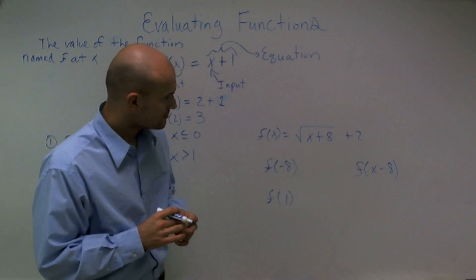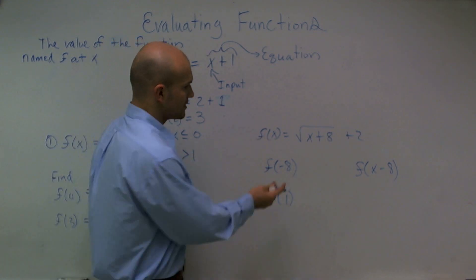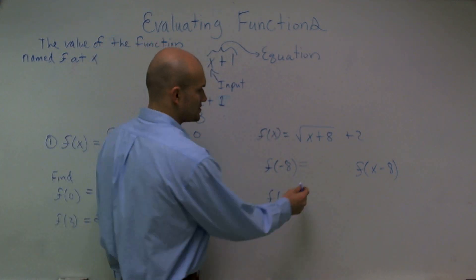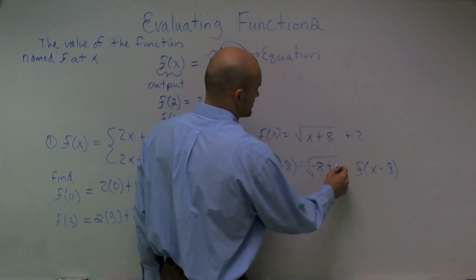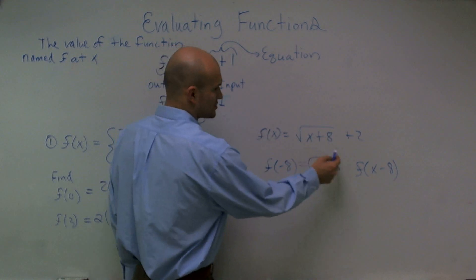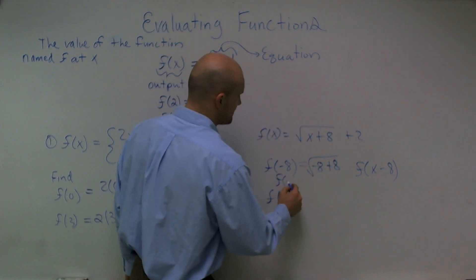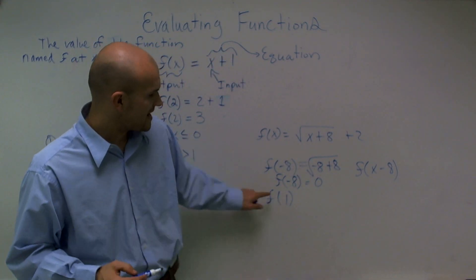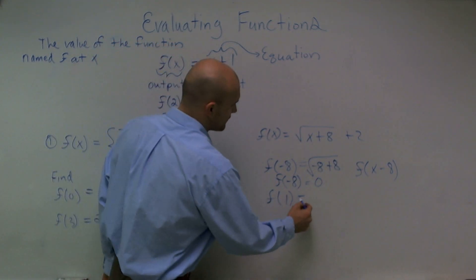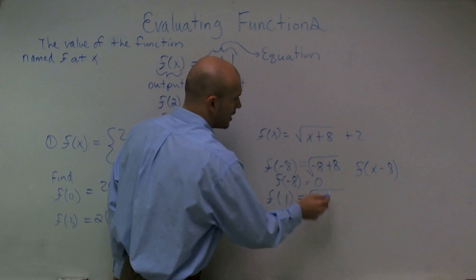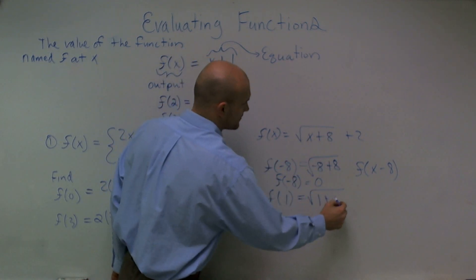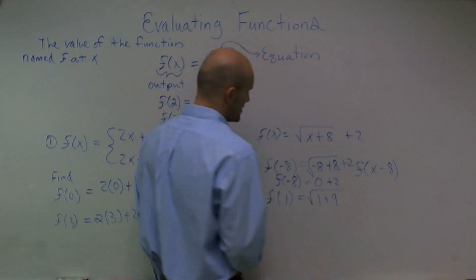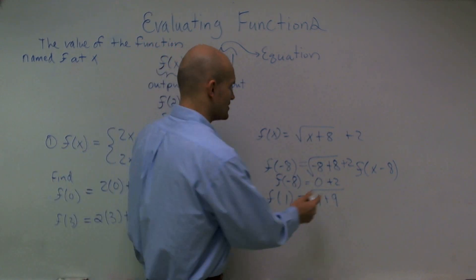For this last example, we're going to take our input values and plug them into each function. Here I have f of negative 8 — I'm going to plug into this function: negative 8 plus 8 equals 0. The square root of 0 is 0, and then plus 2. So the value of my function f at negative 8 is equal to 0 plus 2, which equals 2.